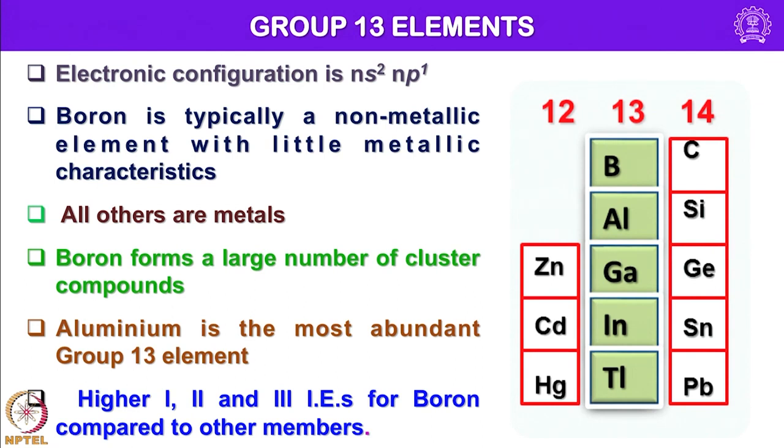Aluminum is the most abundant group 13 element in the earth's crust. All these group 13 elements show higher first, second and third ionization energies for boron compared to other members. Of course, always there is some difference in their chemical reactivity when you compare the group 1 element with rest of the elements, here no exception. Boron behaves little different than aluminum, gallium, indium and thallium because of its smaller size and high charge when it goes to trivalent form.